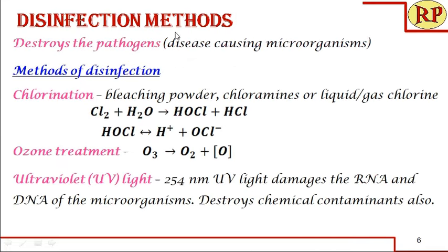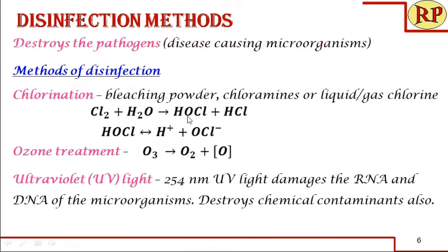Disinfection is the process of destroying pathogens — that is, disease-causing microorganisms like bacteria, viruses and protozoans. One of the most widely and commonly used methods worldwide is chlorination. Bleaching powder, chloramines, or liquid or gaseous forms of chlorine are used for chlorination. In all three cases, hypochlorous acid is the most important disinfecting agent.